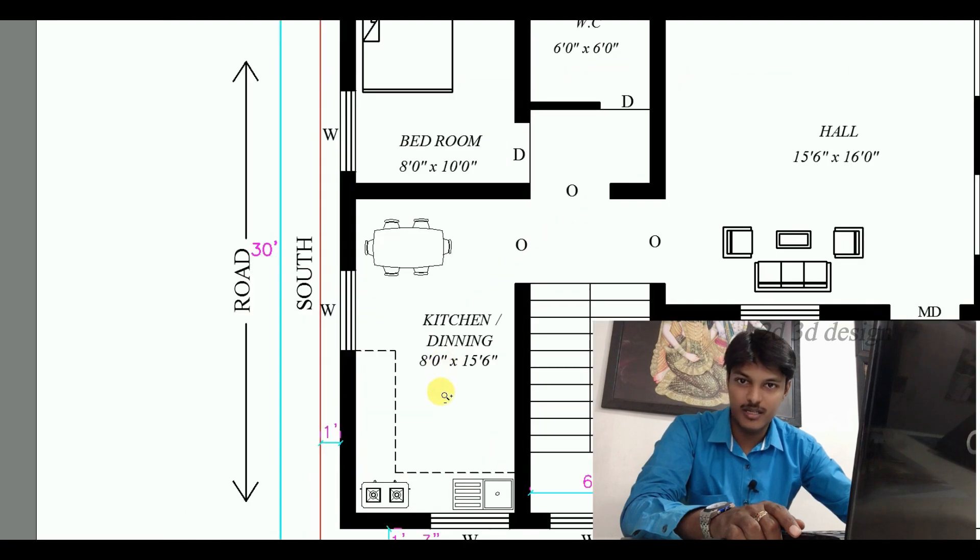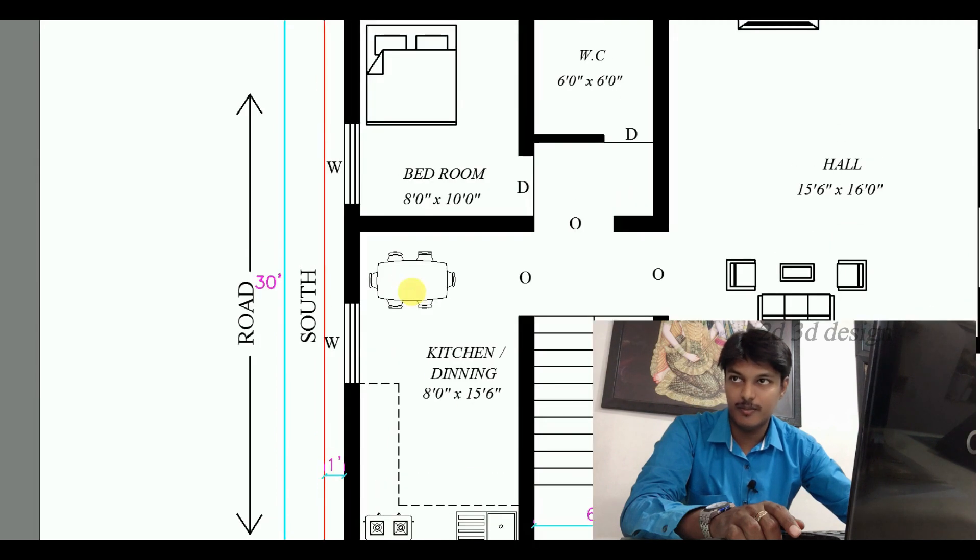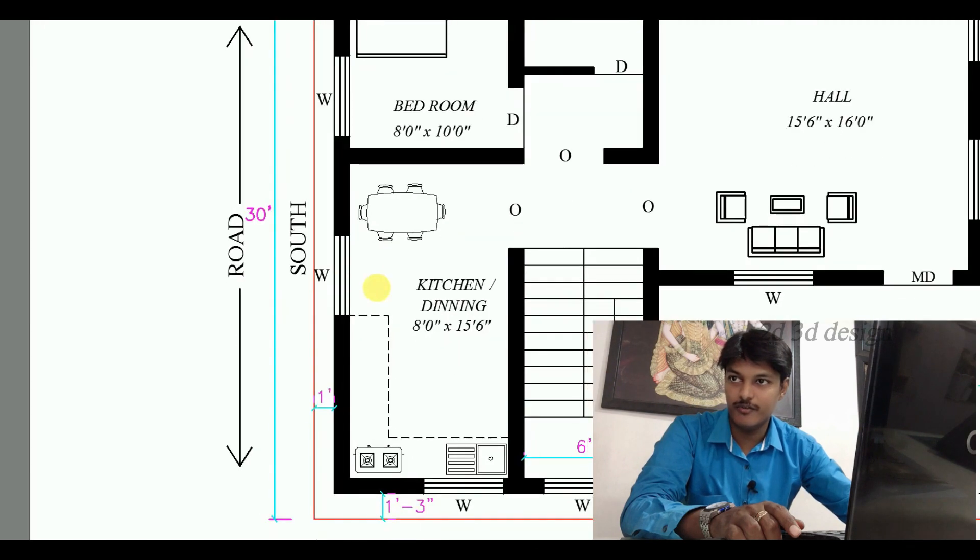This is the kitchen and dining place. The size is 8 feet into 15 feet 6 inches. This is the table top. This is the gas stove and sink. This is the dining area. This is the window and the window.